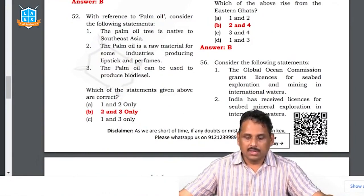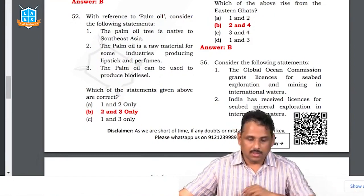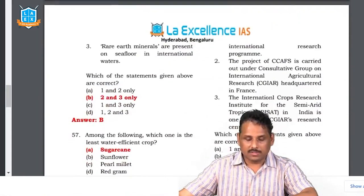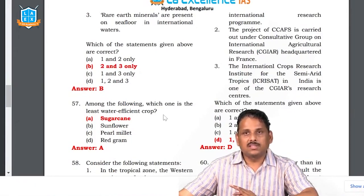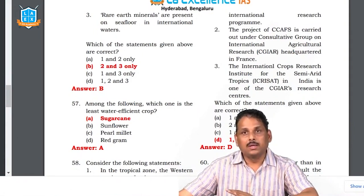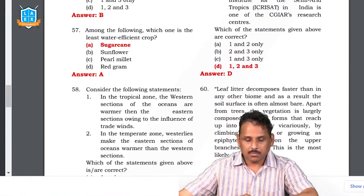Question 56: the General Global Ocean Commission — what does it do? It grants licenses for seabed exploration and mining in international waters. The answer is two and three. Question 57: which is the least water-efficient crop? Sugarcane is the least water-efficient crop. There is something called water budget — rice and sugarcane are the least water-efficient crops. Red gram and pulses grow in arid and semi-arid regions with less water. Sugarcane is the major controversy Maharashtra is facing — water crisis while growing water-guzzling crops like sugarcane.